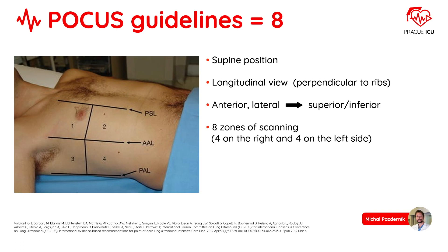Finally, in POCUS guidelines, four standard areas of each hemithorax are identified relative to the sternum and anterior axial line.